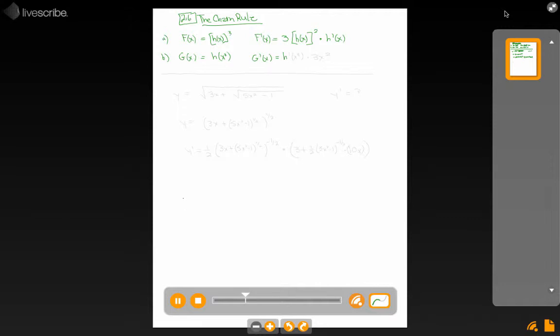We start off by saying, well, whatever h prime of x cubed is, then times the derivative of the inside, which is times 3x squared.